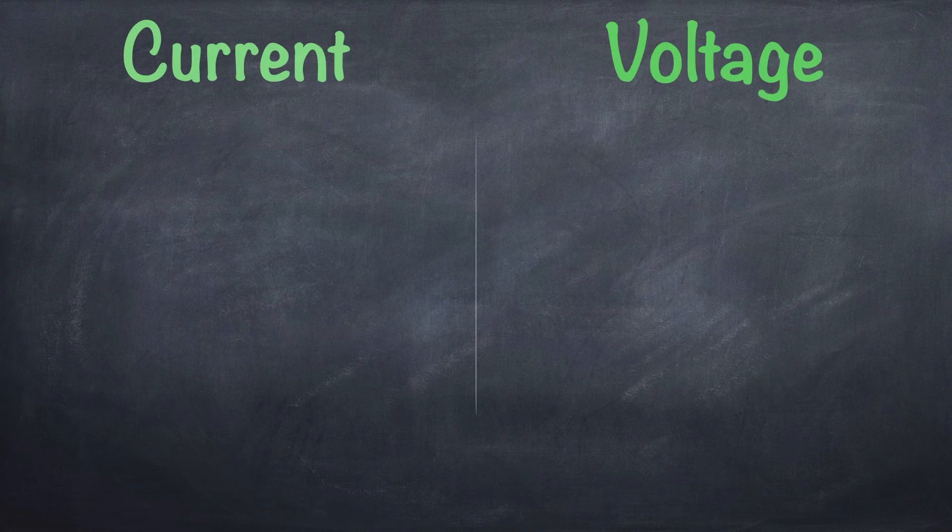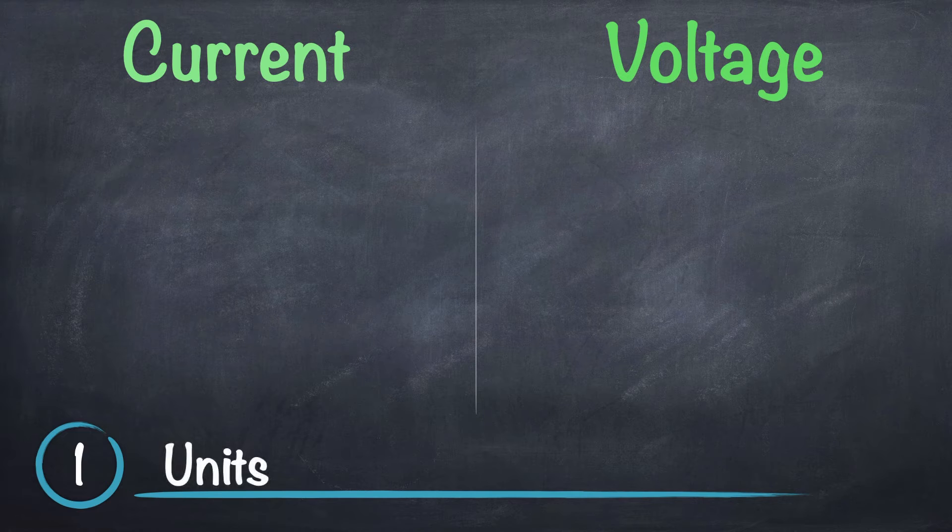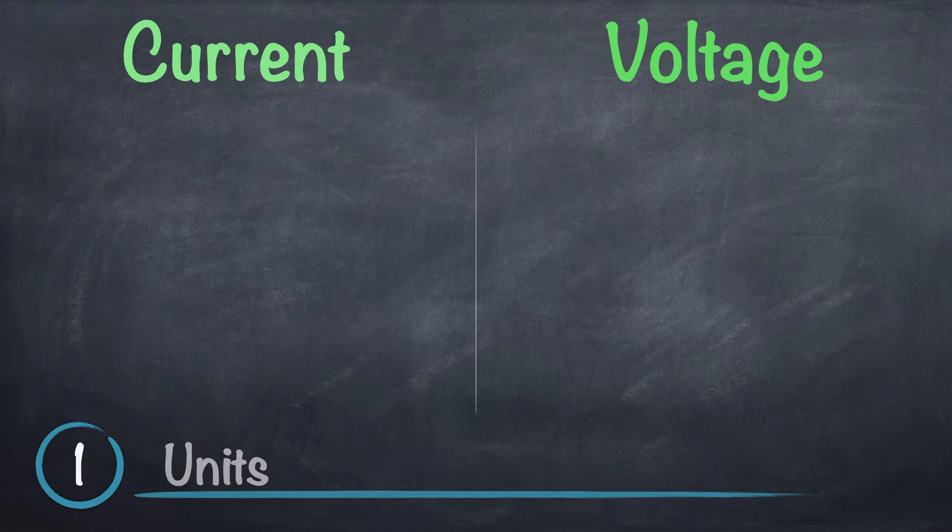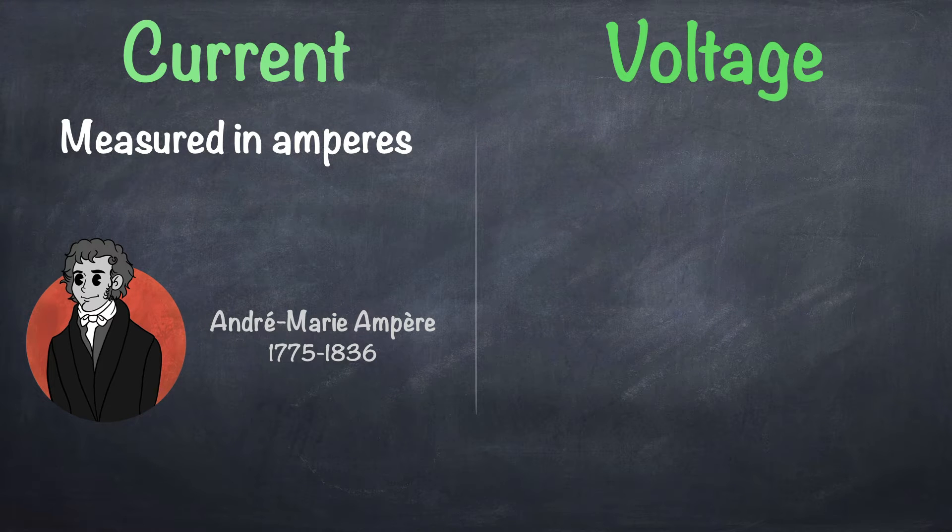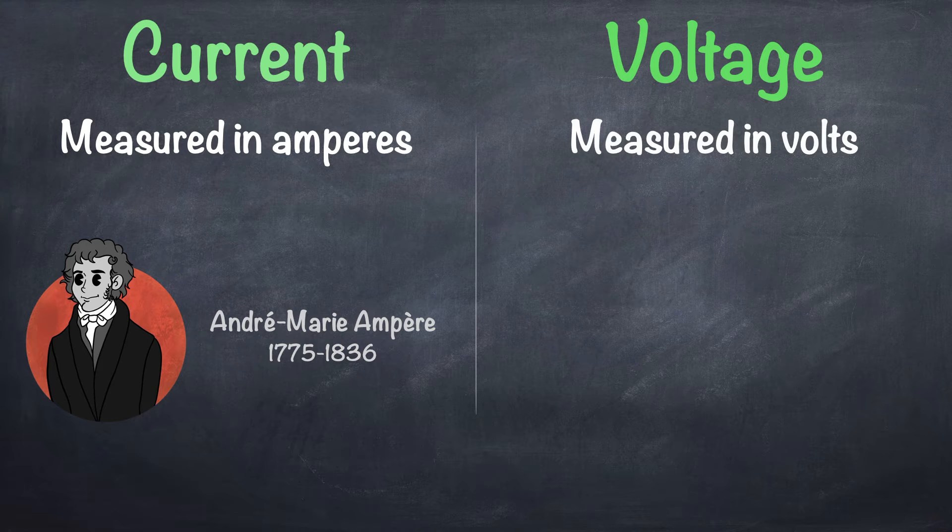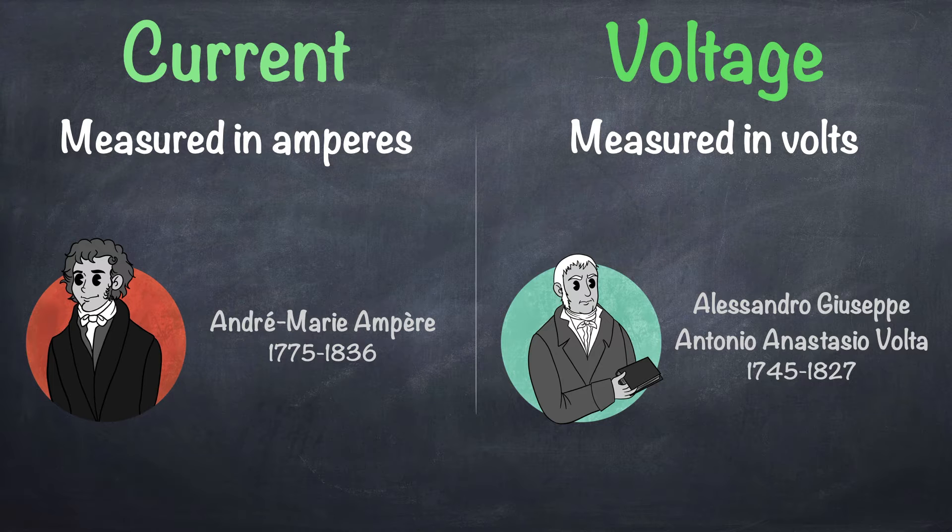Here are five differences between current and voltage. Number one, units. Current is measured in amperes or amps for short, a unit named after French physicist and mathematician André-Marie Ampère. Voltage on the other hand is measured in volts, a unit named after the Italian physicist and chemist Alessandro Giuseppe Antonio Anastasio Volta.